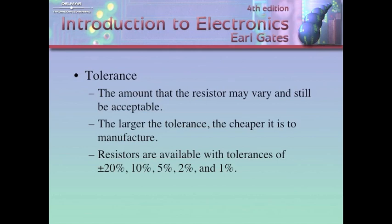All of these components, as precise as electronics is, will have associated with them an electrical tolerance. This is the amount that the resistor may vary and still be acceptable. Everything we manufacture has tolerances. When you get a gallon of gas, some places may give you a little bit more, some a little bit less — it has to be certified by the state weights and measures to make sure they're not cheating you. There's nothing we can make that's perfect.